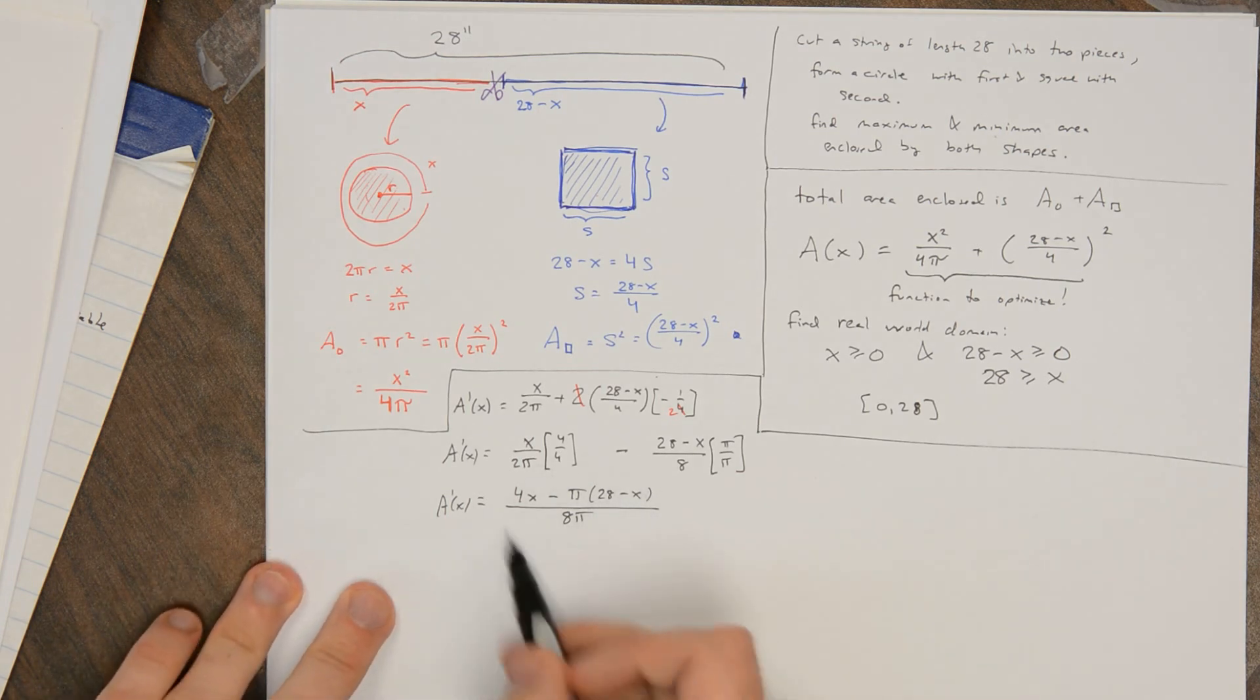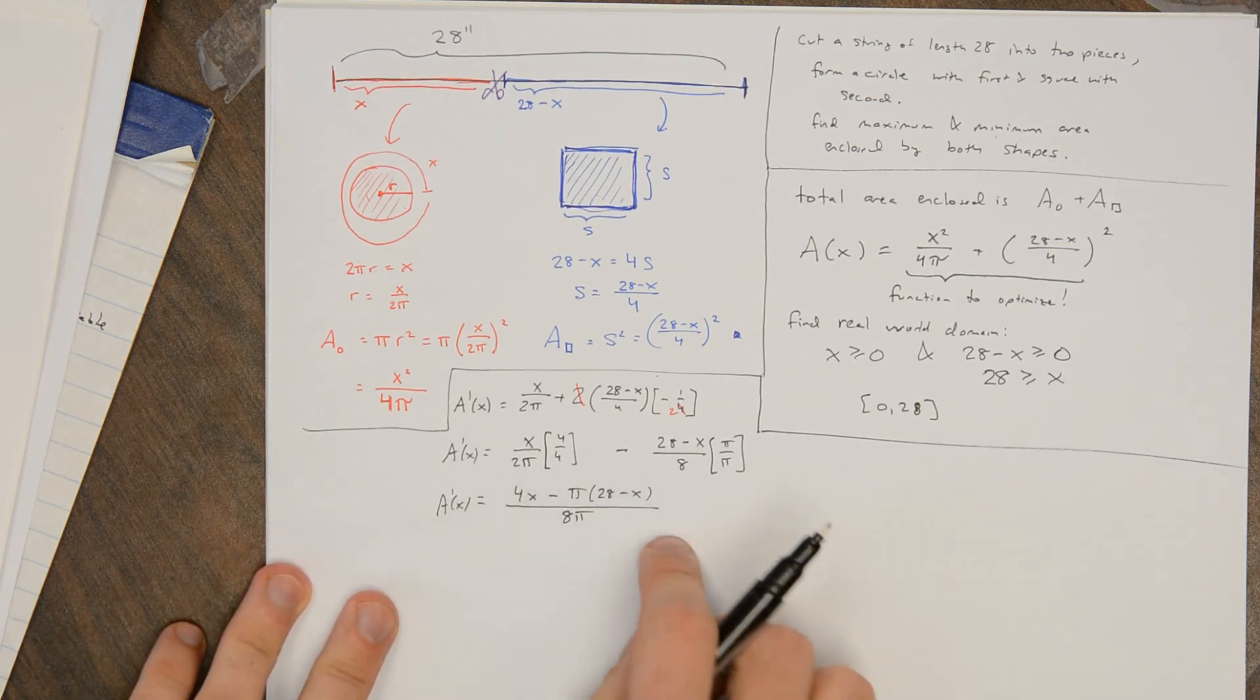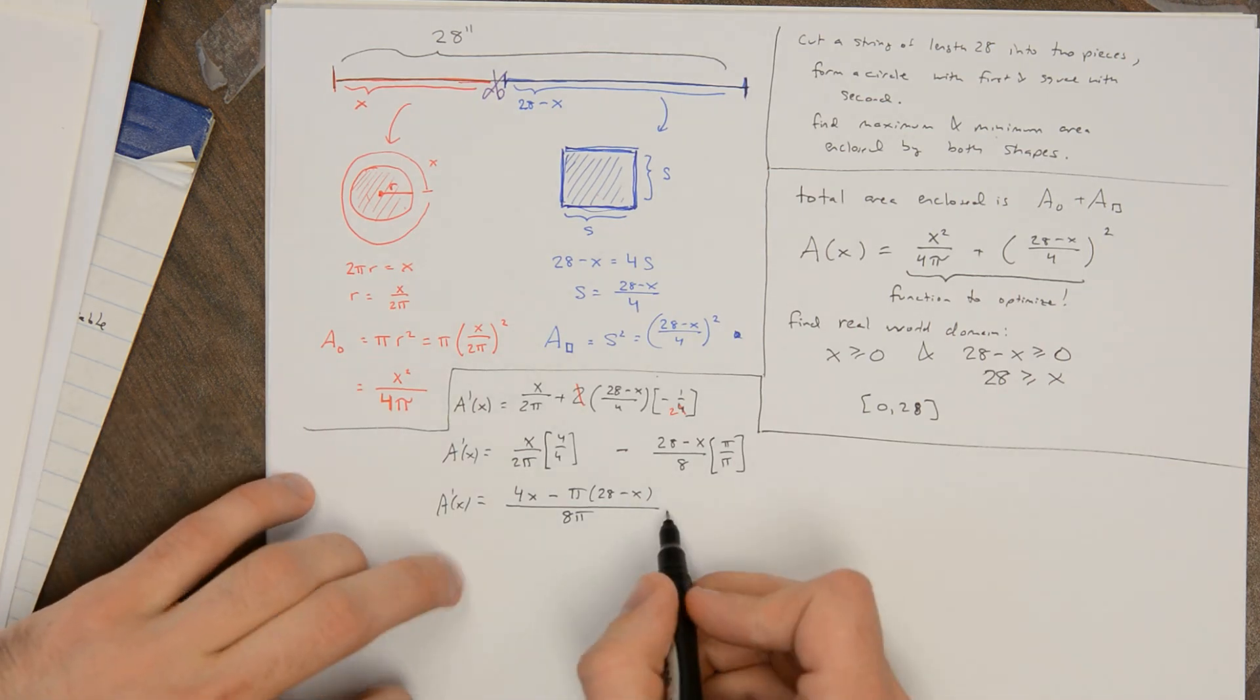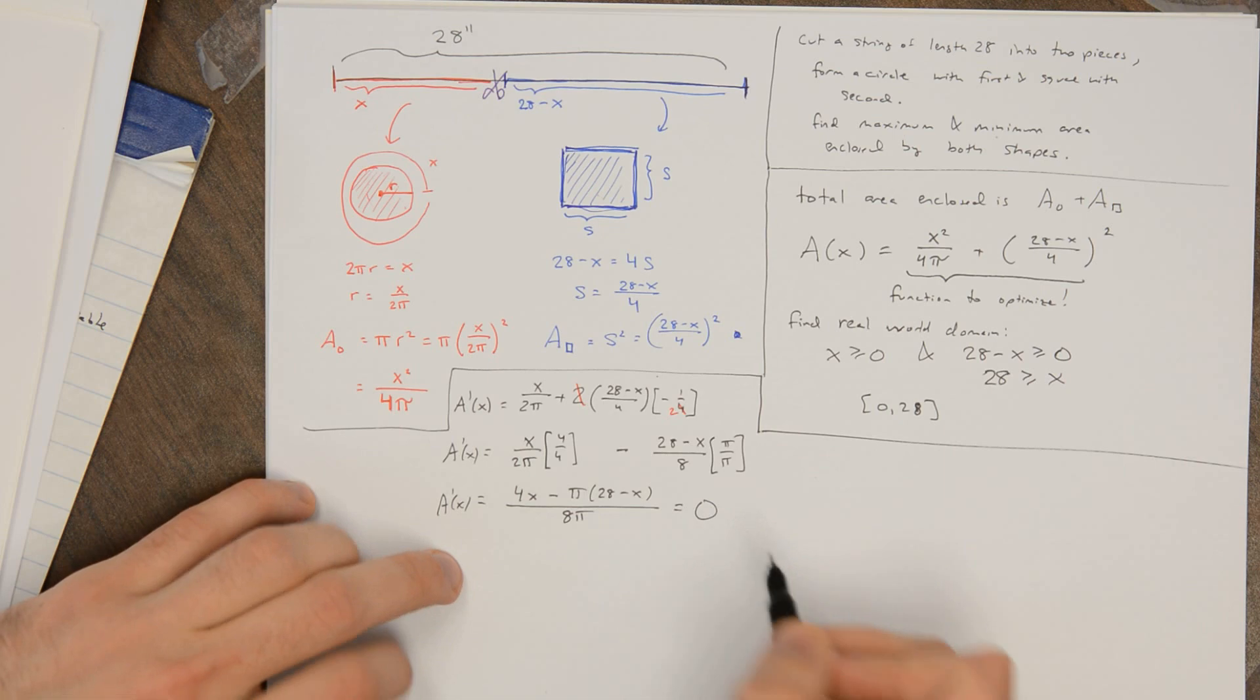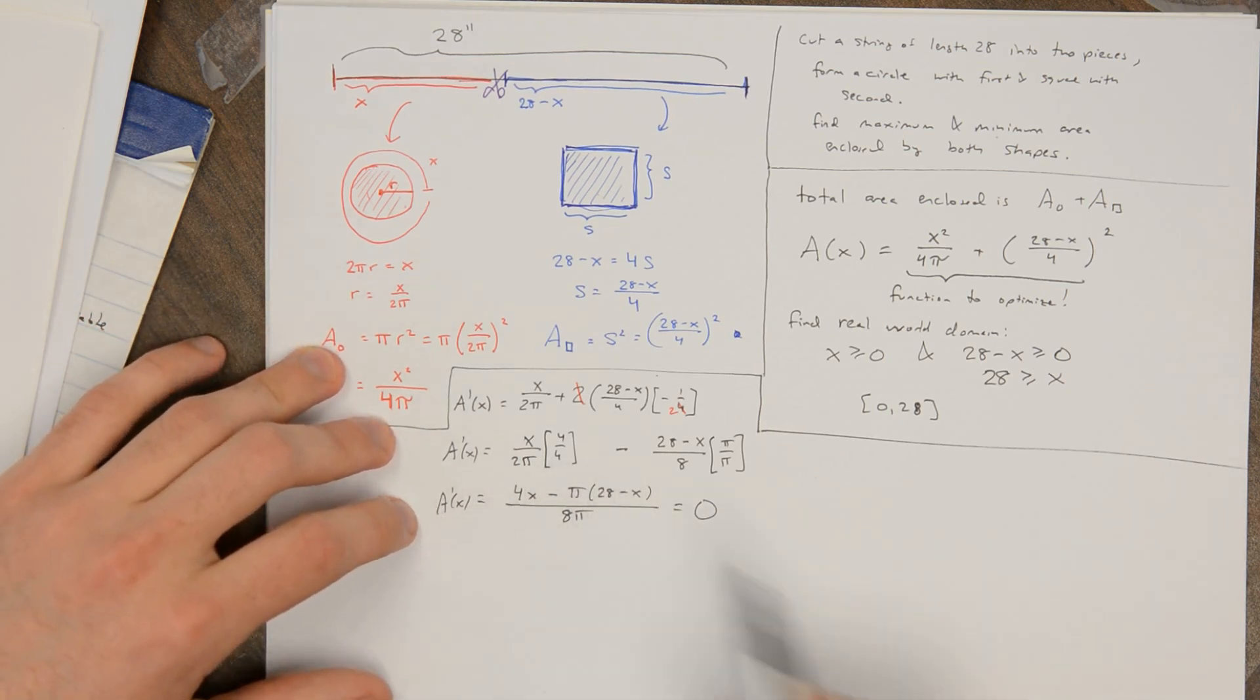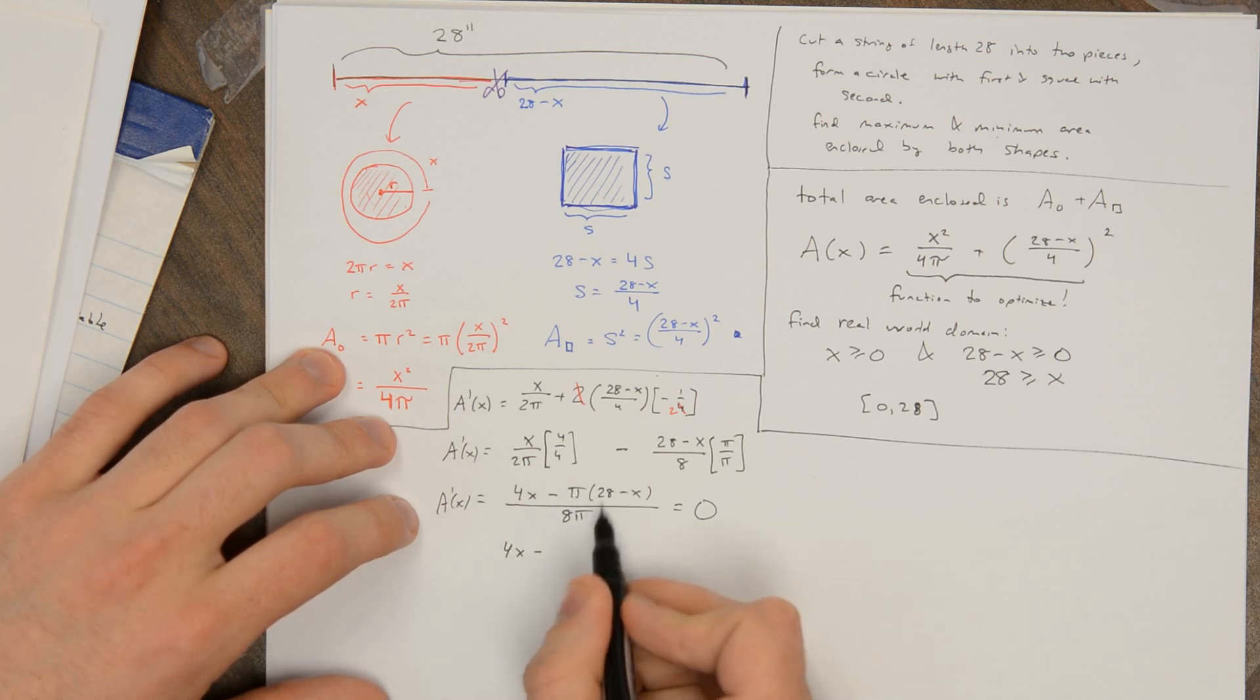Alright, so this exists everywhere. We're not dividing by 0 or anything. So we only care about where this is equal to 0. So when we try to find where a fraction is 0, that's where the numerator is 0. So we're trying to solve 4x - 28π + πx is equal to 0.